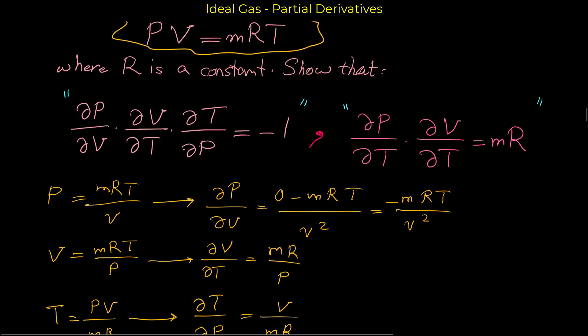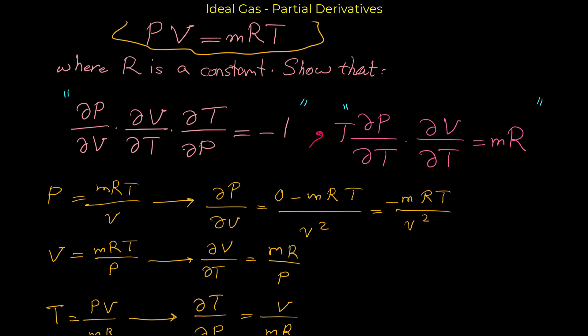Now we want to prove the other equation: t times the partial derivative of p with respect to t, times the partial derivative of v with respect to t, equals mR. Note there must be a t factor here — without it the equation would not be correct. Let's start.